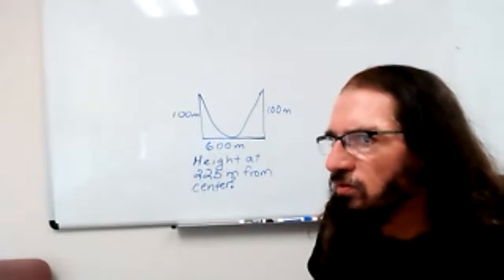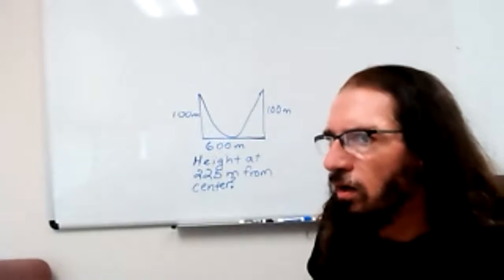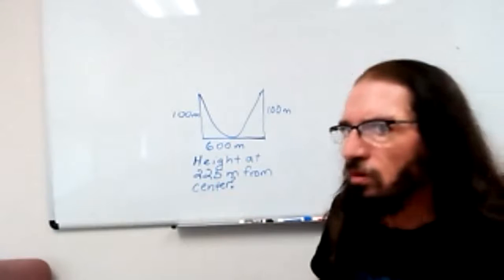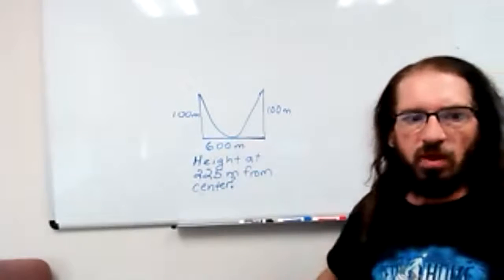Find the height of the cables at a point that is 225 meters from the center. Assume that the road is level.